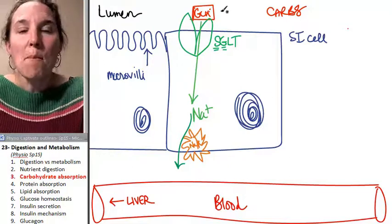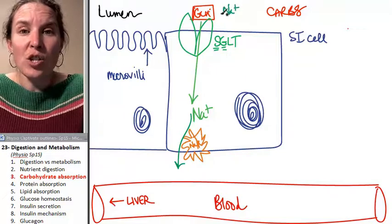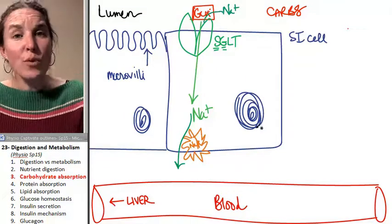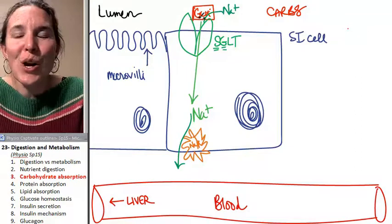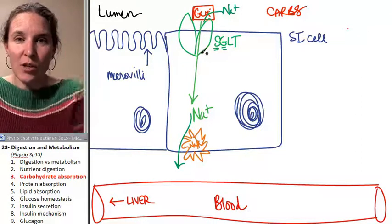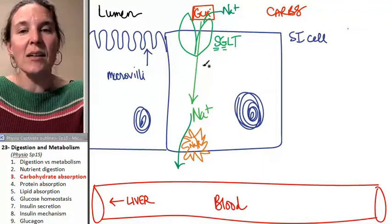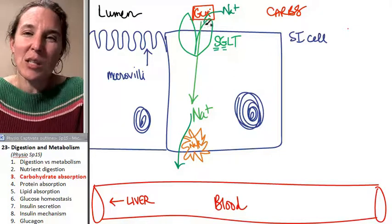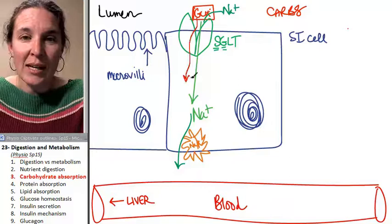This motivates sodium ions from the lumen to hitch a ride through SGLT. When a sodium ion hitches a ride, when sodium says, thanks for the trip into the cell down my concentration gradient, that's easy. Glucose says, I'm going to come along on this little adventure. And so glucose also gets a ride in.